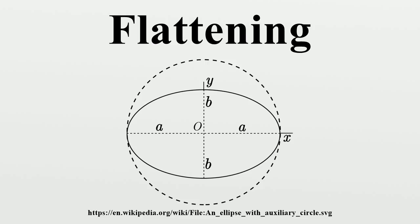Origin of flattening: in 1687 Isaac Newton published the Principia, in which he included a proof that a rotating self-gravitating fluid body in equilibrium takes the form of an oblate ellipsoid of revolution. The amount of flattening depends on the density and the balance of gravitational force and centrifugal force.